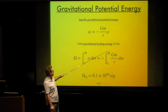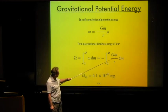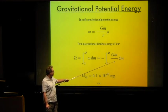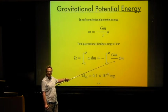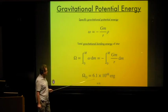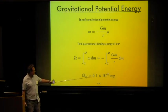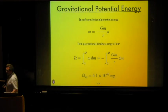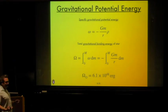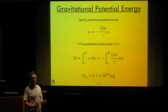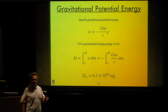For the Sun, the total gravitational binding energy is about 6×10^48 ergs. That's how much energy you would basically have to inject into the Sun in order to scatter its material to infinity.